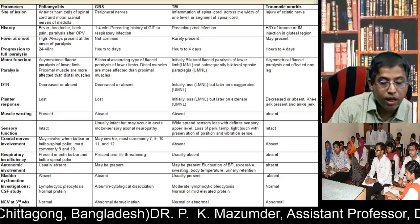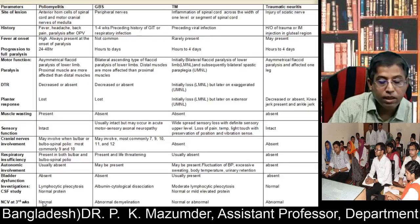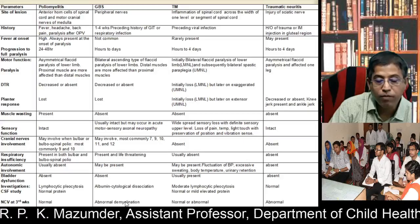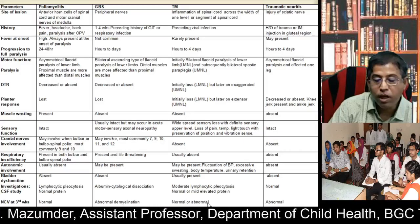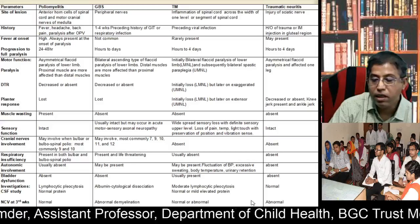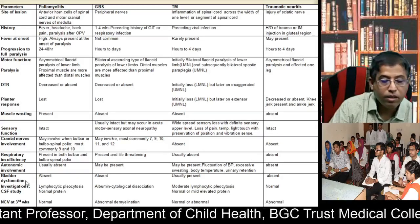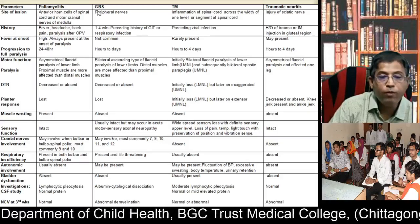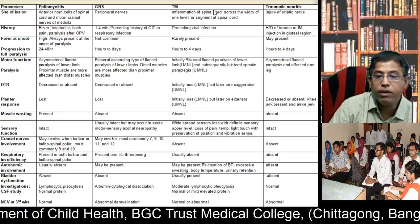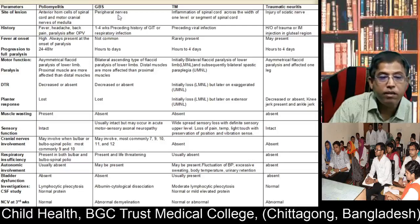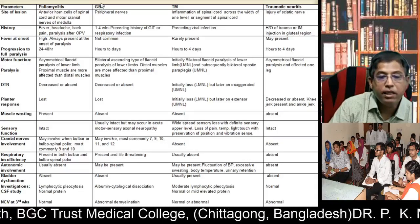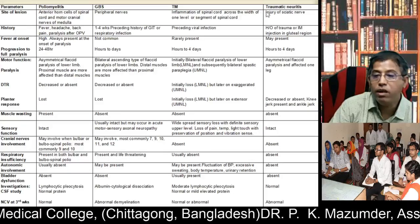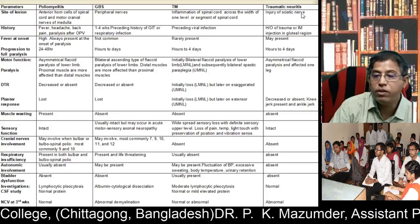Nerve conduction velocity at three weeks: normal in poliomyelitis, abnormal with demyelination in GBS, normal or abnormal in transverse myelitis, and abnormal in traumatic neuritis. So these are the most important characteristic features of poliomyelitis, GBS, transverse myelitis, and traumatic neuritis. Remember: poliomyelitis affects anterior horn cells, GBS affects peripheral nerves, transverse myelitis is inflammation of the spinal cord, and traumatic neuritis is injury of the sciatic nerve.